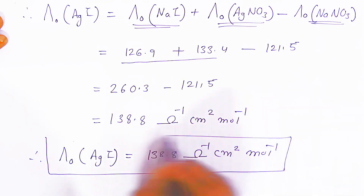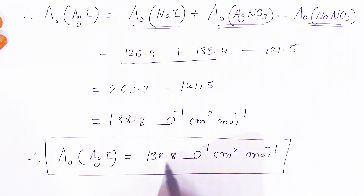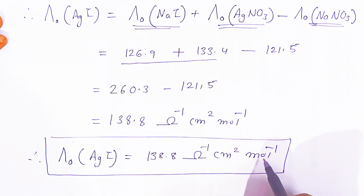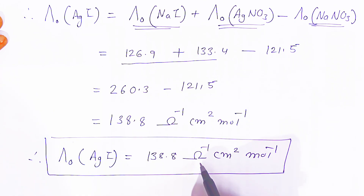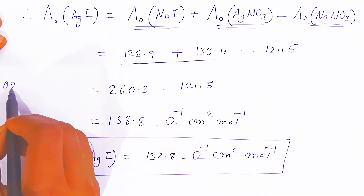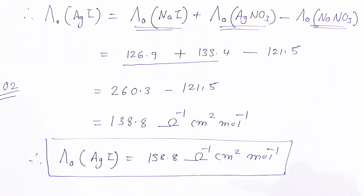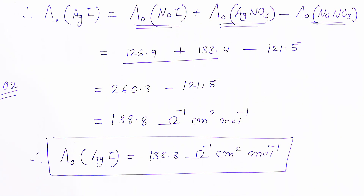This is how you calculate the molar conductivity of silver iodide at zero concentration, which is 138.8 per ohm centimeter square per mole, also written as ohm inverse centimeter square mole inverse. This is the answer for this two-mark question in examinations. If you like this video, please share and subscribe. Thank you very much. Have a nice day. God bless you.